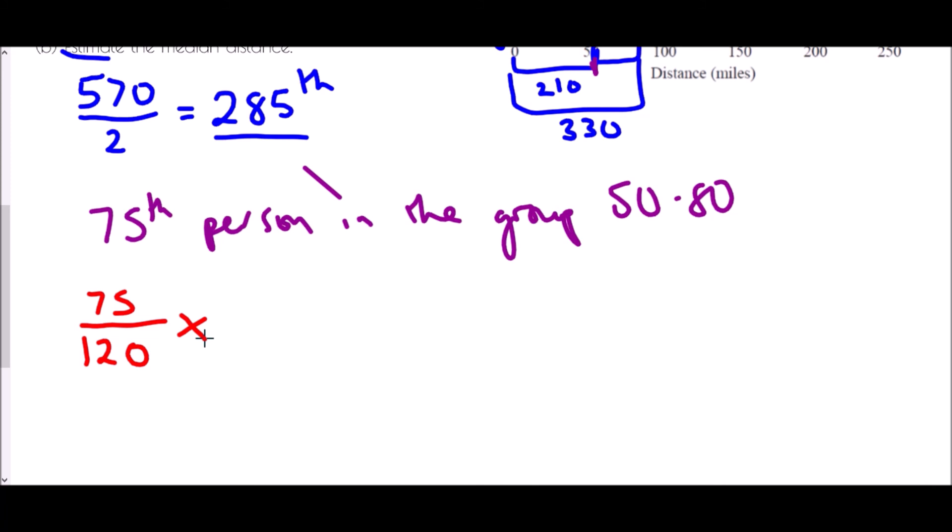So I can see what proportion of the group I am dealing with and the group width was 30. So I'm going to type that into a calculator, 75 over 120 and I'm going to multiply it by 30. It gives me 18.75.